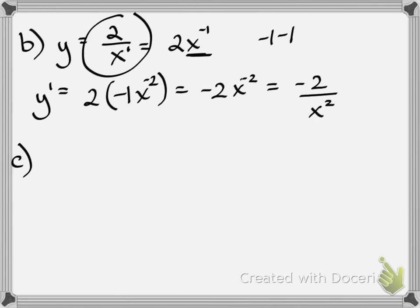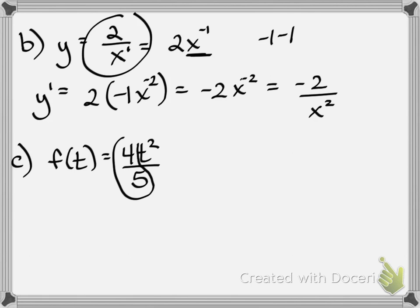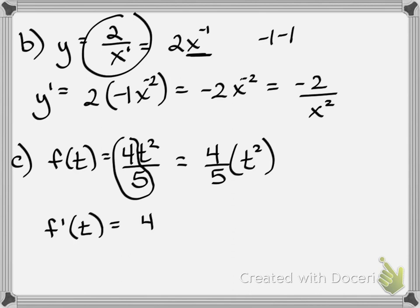Example C: f(t) equals 4t squared over 5. This might not immediately look like a constant times a power, but 5 is a constant, so it's 4 fifths times t squared. The derivative is: write the constant 4 fifths, multiply by the derivative of t squared, which is 2t. Then multiply 4 fifths by 2, making the 2 a fraction and multiplying straight across, giving 8t over 5.